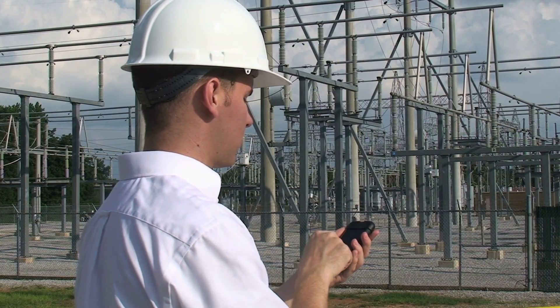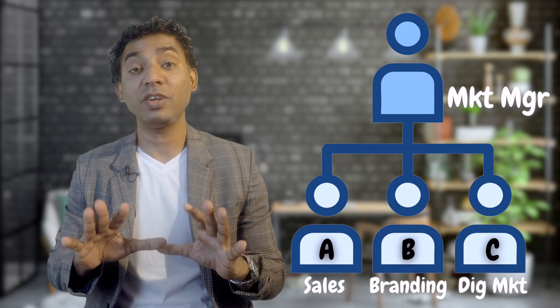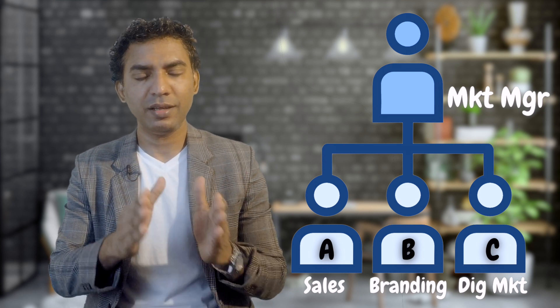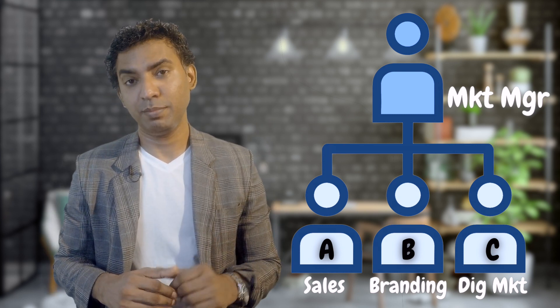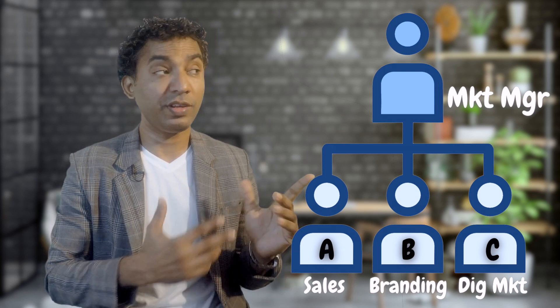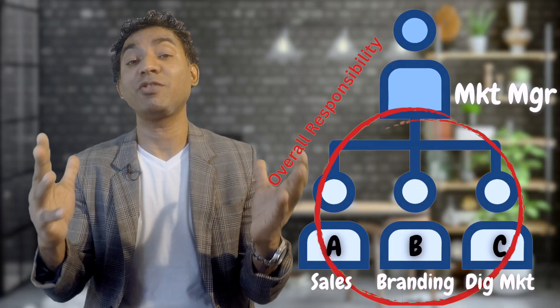Let me explain this with a very simple example. Assume I am a marketing manager of an organization. Under me, there are three subordinates: A, B, and C. A is responsible for sales, B for branding, C for digital marketing. Now, A, B, C have to do their tasks perfectly, and they are responsible for their tasks.